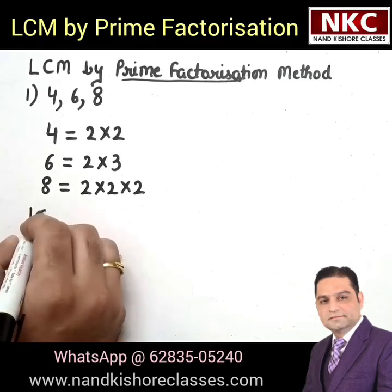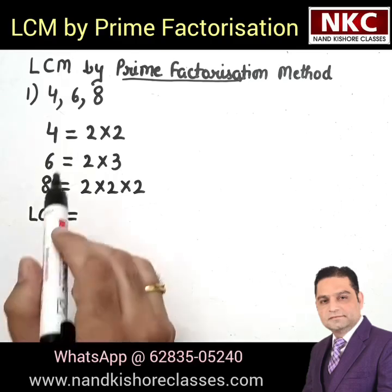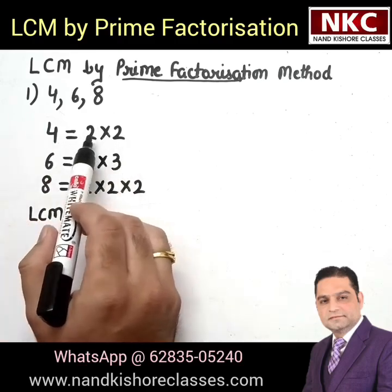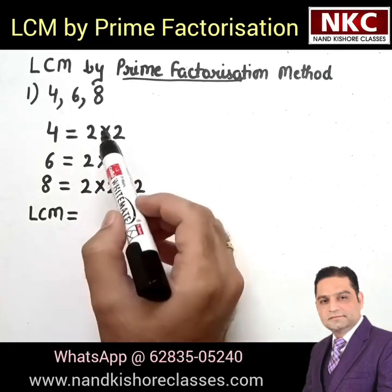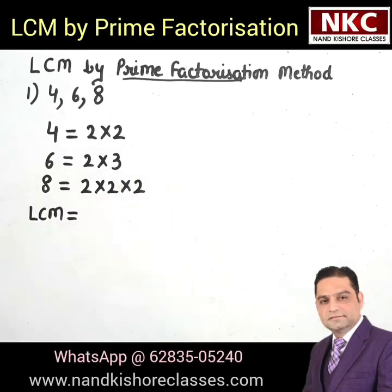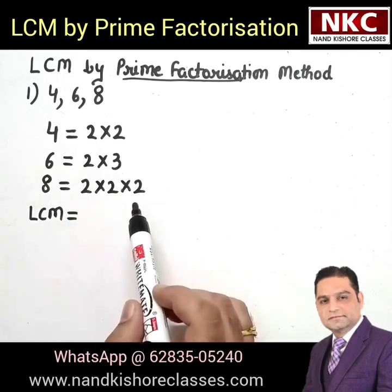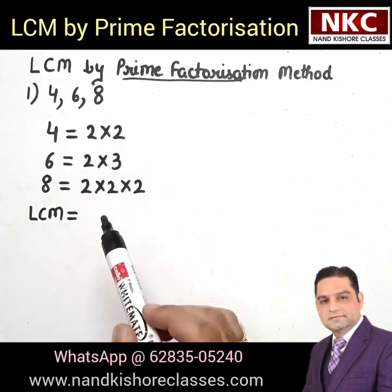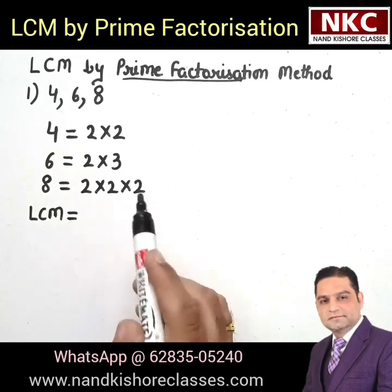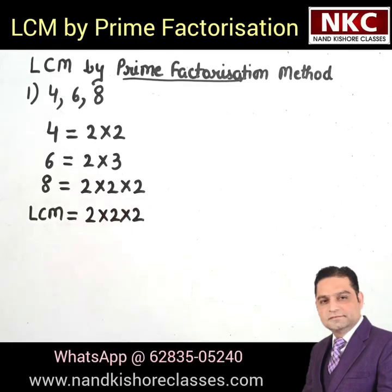Now, how to write LCM looking at these prime factorizations? Please have a look very carefully. Let's check the first factorization — count how many times 2 is appearing. 2 is coming 2 times in the first number, 1 time in the second, and 3 times in the last. Take the highest count, which is 3. So you will write 2 three times here. This is the first step.